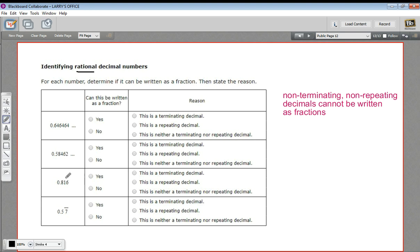0.816, that can be written as a fraction. This is just 816 thousandths, so that's pretty easy to write as a fraction. Actually, let's say yes to this one already. The reason it can be written as a fraction is because this is a terminating decimal. All terminating decimals can be written as a fraction.